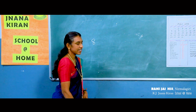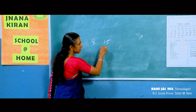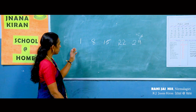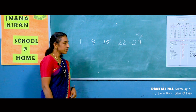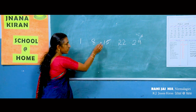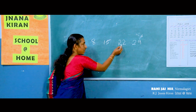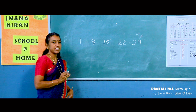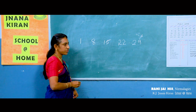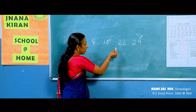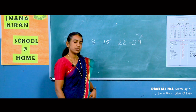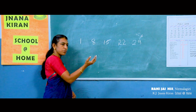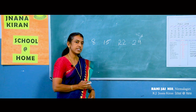Look — which days are Mondays? 1, 8, 15, 22, and 29. These are Mondays. Do you know what is the relation between these days? 1 plus 7 is equal to 8. 8 plus 7 is equal to 15. 15 plus 7 is equal to 22. 22 plus 7 is equal to 29. That means on moving down, the number increases by 7. That is the relation between these days.